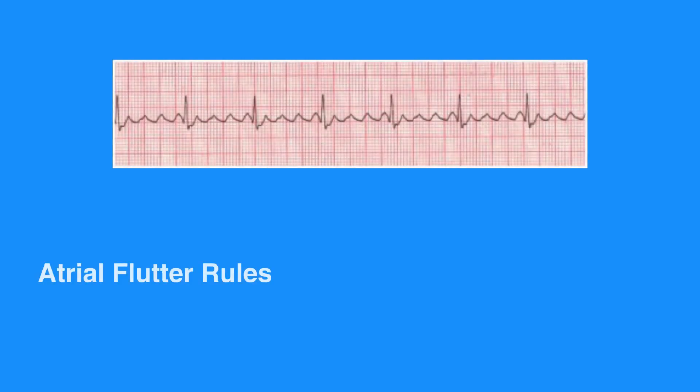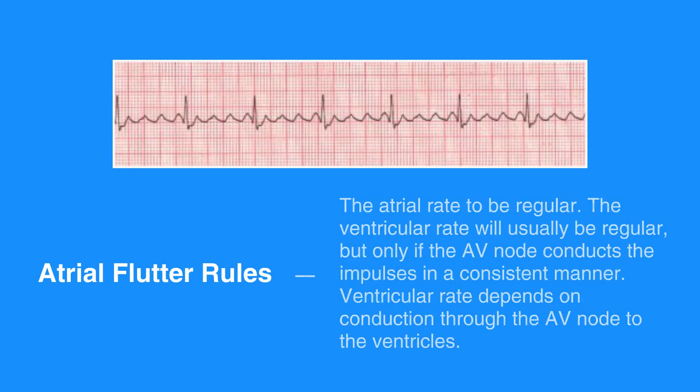The atrial flutter rules include the atrial rate to be regular. The ventricular rate will usually be regular, but only if the AV node conducts the impulses in a consistent manner. Otherwise, the ventricular rate will be irregular.